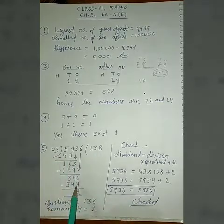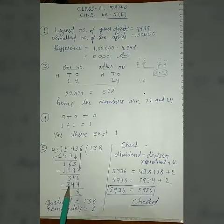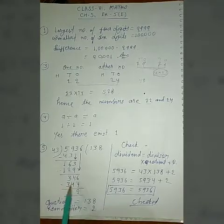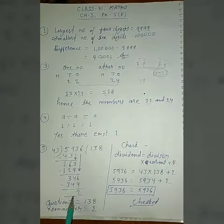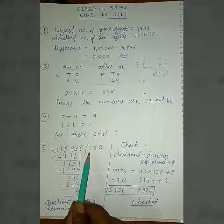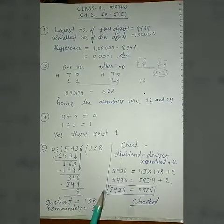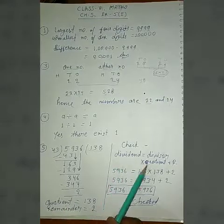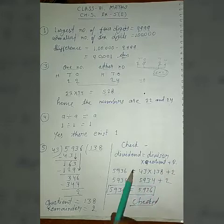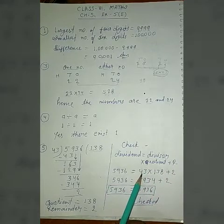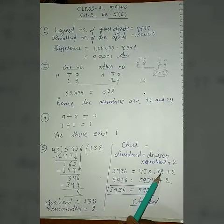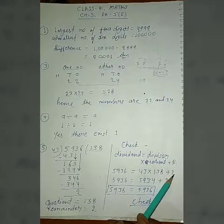It will be divided by 43, 8 times. 8 times 3 is 24, carry 2. 8 times 4 is 32 plus 2 is 34. 346 minus 344, remainder is 2. Now this is the quotient: 138. This is the remainder: 2. Now check the answer.